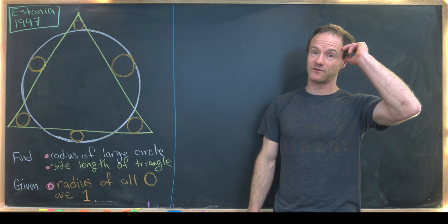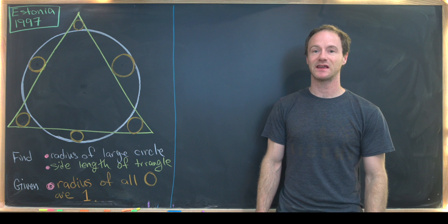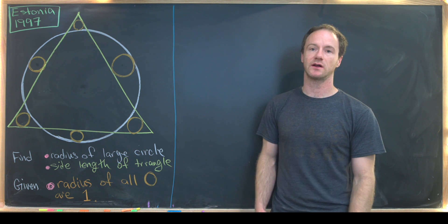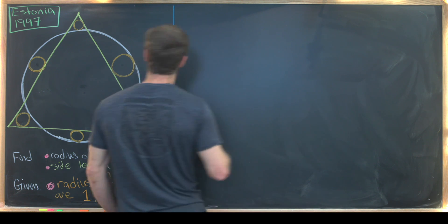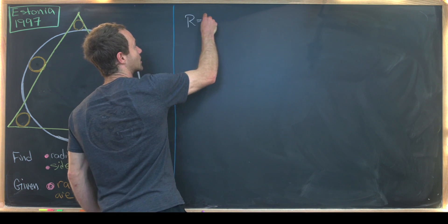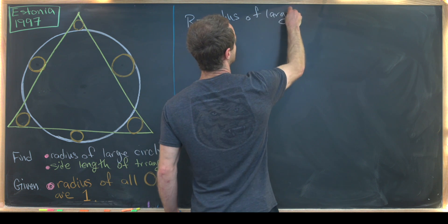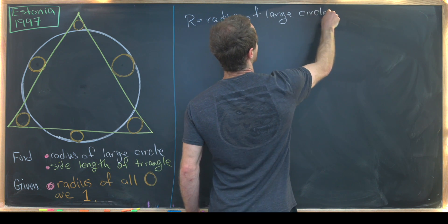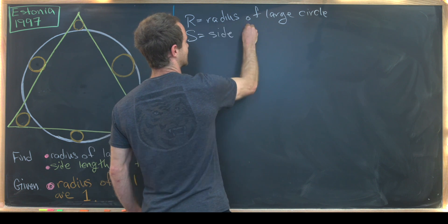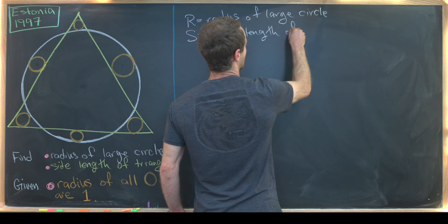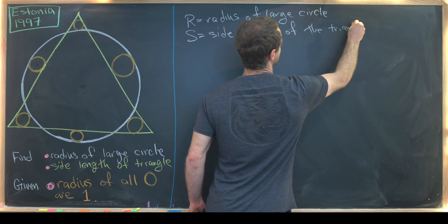Then given that information we want to find the radius of the large circle and the side length of the large triangle. So there'll be a couple of things that I start with here. First I'll go ahead and set R equal to the radius of the large circle so that we've got something to work with here. And I'll set capital S equal to the side length of the large triangle.